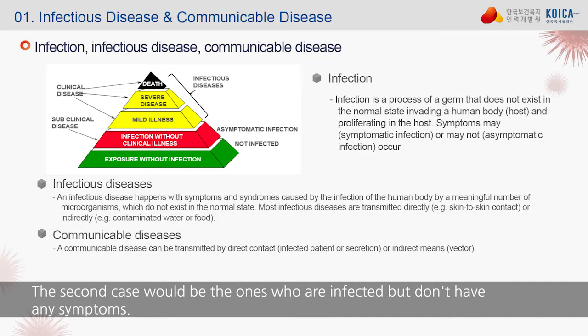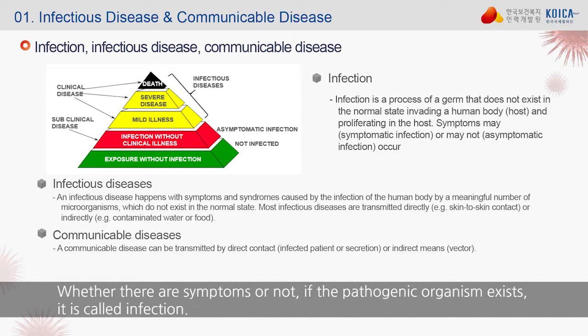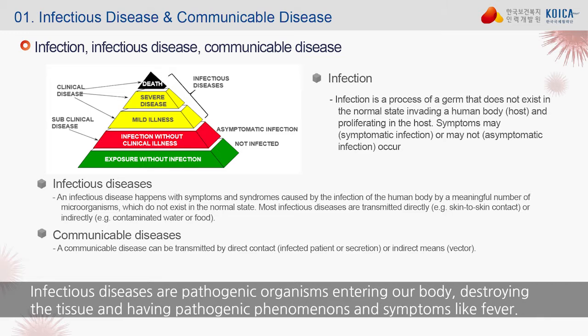The second case would be those who are infected but don't have any symptoms. One step above infection without clinical illness would be mild illness, then severe disease, and finally death. Whether there are symptoms or not, if the pathogenic organism exists, it is called infection. Infectious diseases are pathogenic organisms entering our body, destroying the tissues, and causing pathogenic phenomena and symptoms like fever.